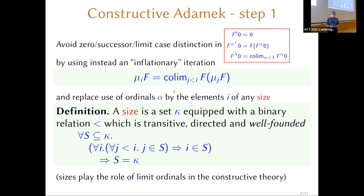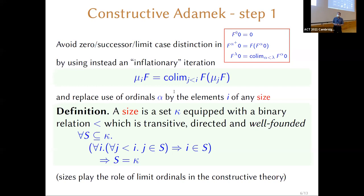To say a relation is well-founded: if we have a set of sizes S that is closed — meaning a size i is in S if all its predecessors are in S — then S must be the set of all possible sizes. That's the constructive definition of well-foundedness. Sizes play the role that ordinals did; more specifically, classically an ordinal is a size if it's a limit ordinal, since the directedness property rules out zero and successor ordinals.